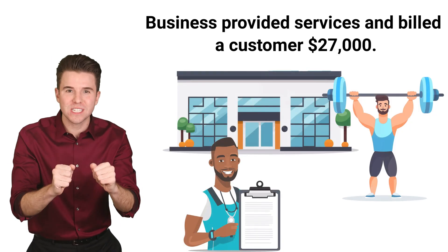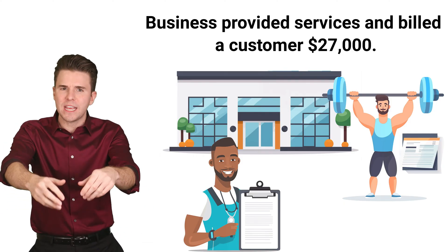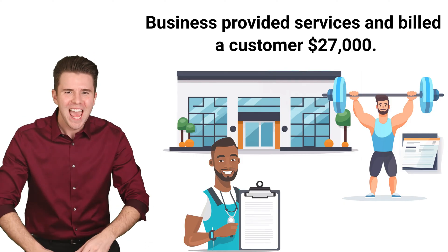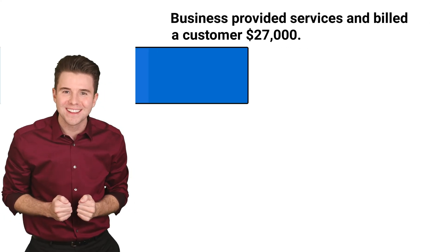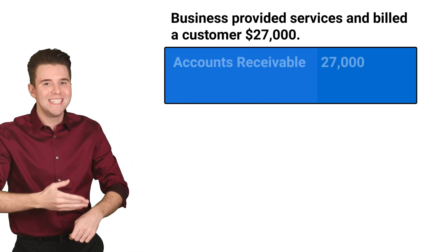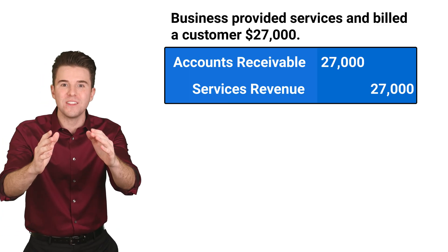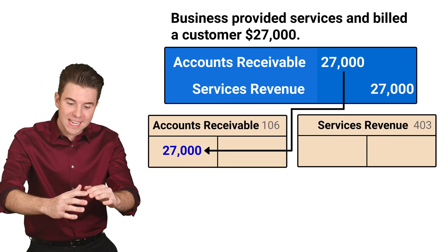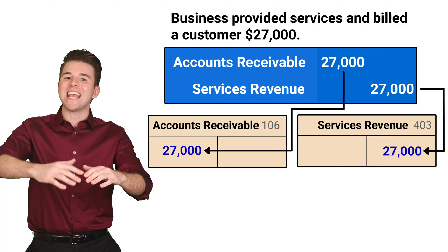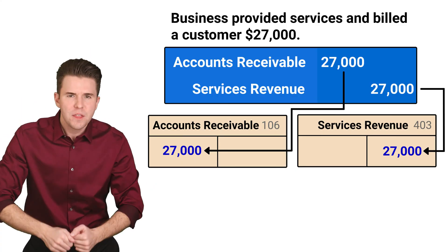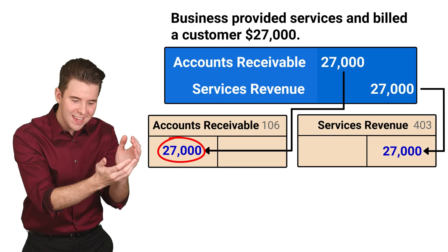Next, the company provides training services to a customer and bills them for $27,000. Because we did not receive cash right after providing the services, this creates an accounts receivable, meaning the customer owes us money. To record the entry, we debit accounts receivable for $27,000 and credit services revenue for $27,000. We debit accounts receivable because debits increase asset accounts, and we credit services revenue because credits increase revenue accounts. The $27,000 is posted to accounts receivable to remind us that the customer owes us money in the future.